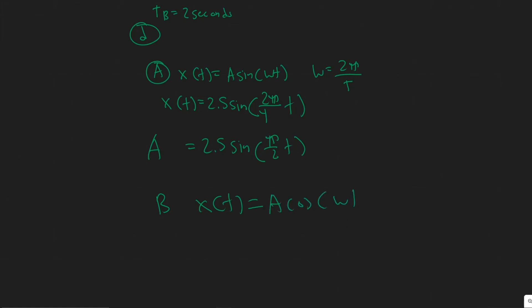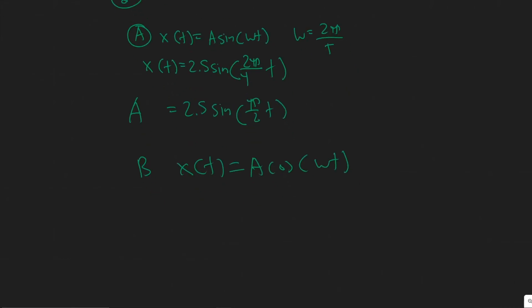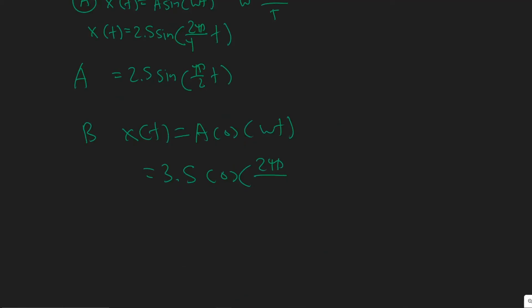So the amplitude for this one was 3.5 cosine. Omega is 2π over the period, which for B was 2 seconds. So 2. Multiplying it out, 3.5 cosine. 2 over 2 is just 1. So this is just π t. And yeah, so this is your B.